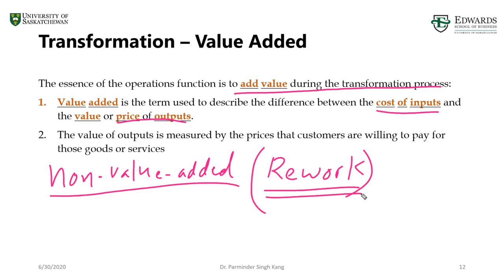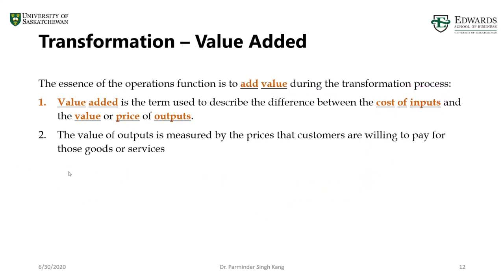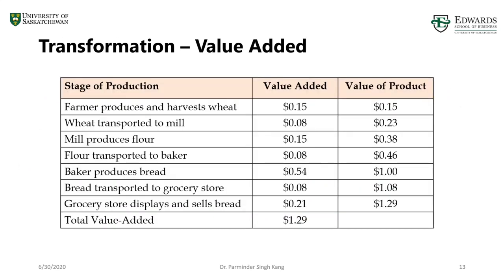When you have non-value-added activities, this tends to increase the overall cost of the finished product, because whatever material, labor hours, machine hours, electricity, or anything else required to produce goods and services is wasted and must be compensated for. You can increase the value of a product by decreasing the cost of inputs — by minimizing non-value-added activities such as rework, quality issues, ensuring suppliers provide the right quality product, and in our McDonald's example, taking correct orders by better training your employees.